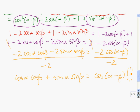All the other identities, now that we have this one proven, we can use simpler identities to prove them.